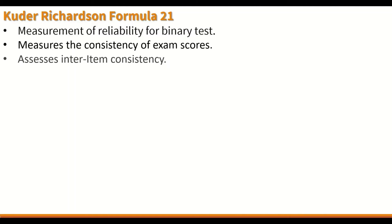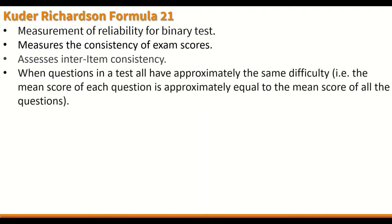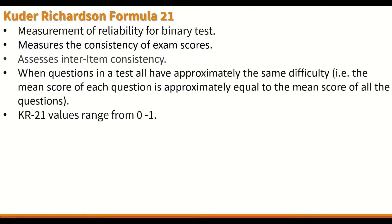The KR-21 measures the consistency of exam scores and assesses inter-item consistency. KR-21 is used instead of KR-20 when the questions in a test all have approximately the same difficulty, i.e., the mean score of each question is approximately equal to the mean score of all the questions. The KR-21 values range from 0 to 1: 0 means unreliable, and a value of 1 means excellent reliability.